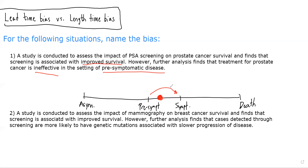Therefore, what this situation is implying is that even though patients who are detected through screening live longer than those who are detected through symptoms, it might just be because we're detecting these patients earlier in their course, but not actually changing the course of disease. Because these pre-symptomatic patients detected through screening still go on to develop symptomatic disease and have the same exact course. So this is a situation illustrating lead time bias — it's called lead time bias because this time is the "lead time," this artificial amount of time we're getting before symptom onset that contributes to the apparent improved survival among those detected with screening tests compared to those detected through symptoms.